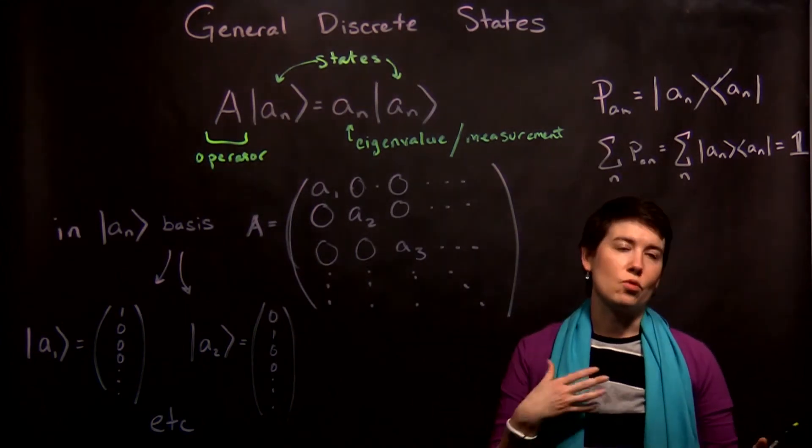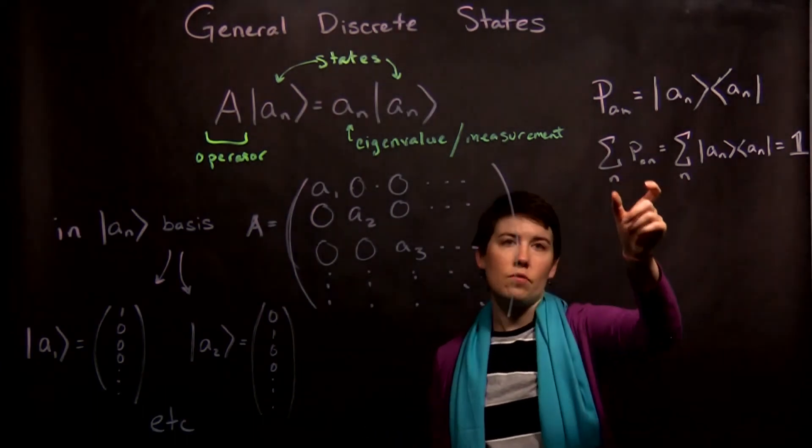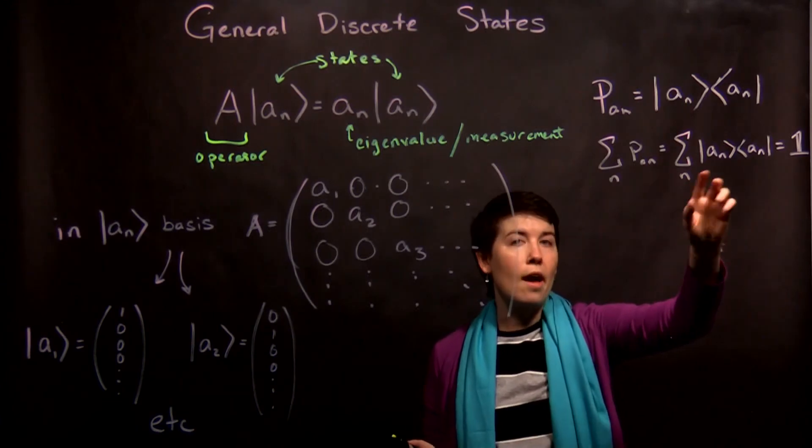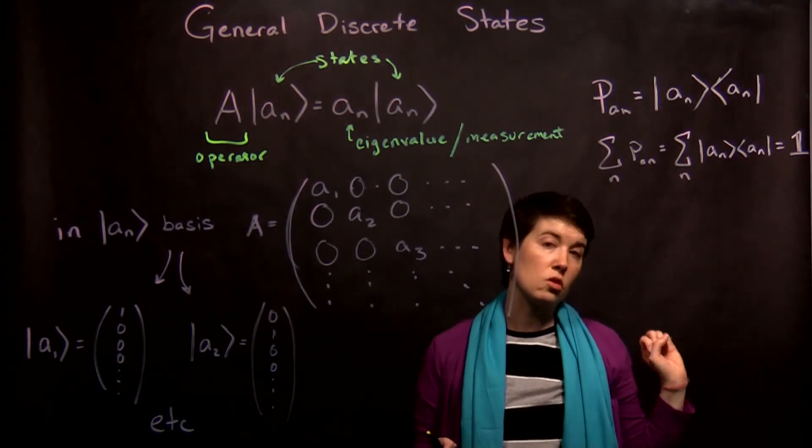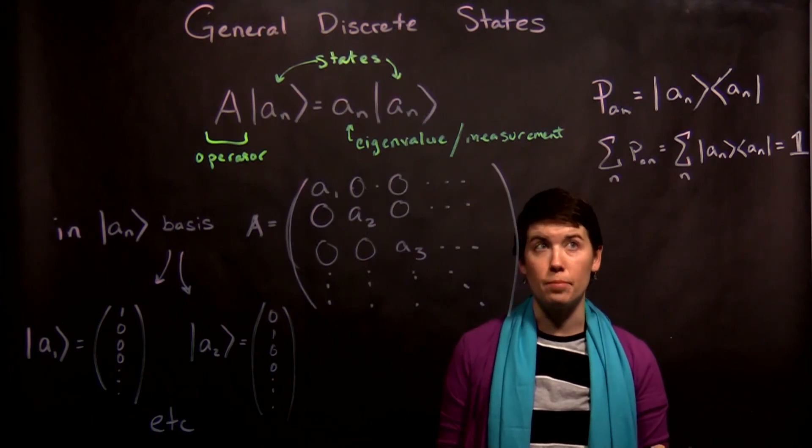But it also is going to allow us to really convert the basis. And a large part of doing that is using the fact that when you take the sum of all of your projection operators and add them up, that equals the identity matrix. So we can pop that in and use that as a technique to actually change the basis.